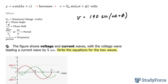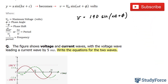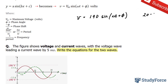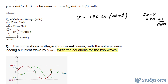We know that the period extends from 0 to 20. To find the period, we subtract the start point from the end point: 20 minus 0 equals 20. That represents our period of 20 milliseconds per cycle. Using our period, we can find omega. We'll replace this value in and solve for omega.